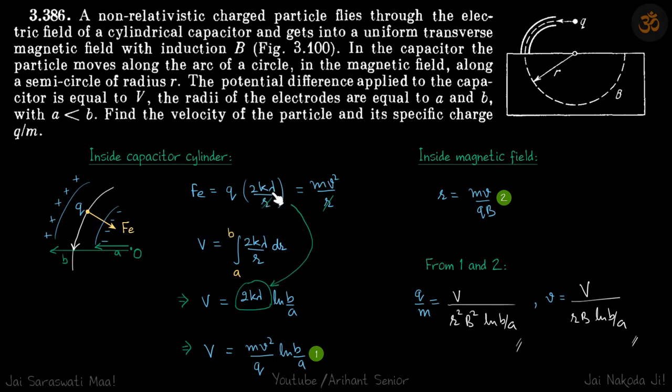We don't know the value of lambda, but that's fine. This equals MV squared by R because it's turning in a circle of radius R. So one R will get canceled.